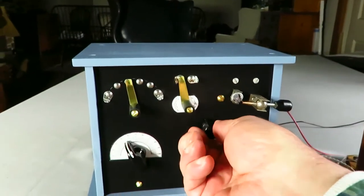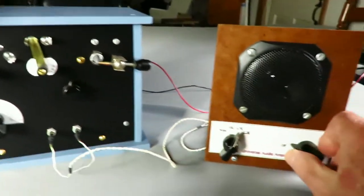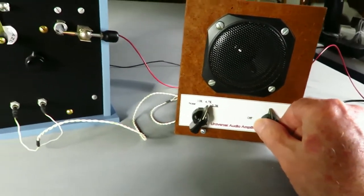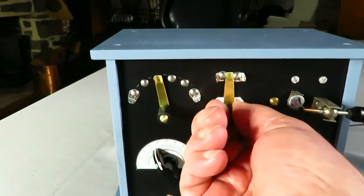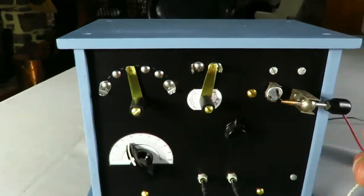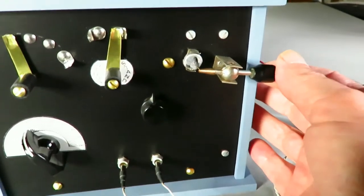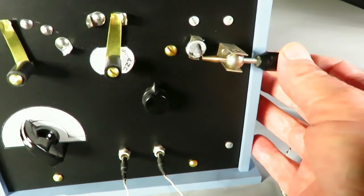Now we'll switch from the diode to the crystal detector stand. Switched over to the stand and I think this is a piece of steel galena.